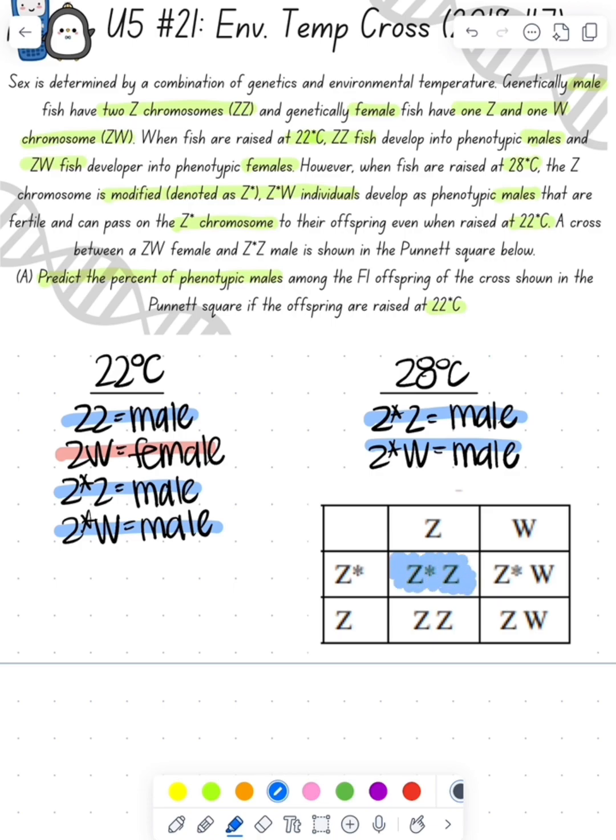If we look at the Punnett square, we see the first one is a Z*Z—that's a male. Z*W, that's a male. ZZ is a male and then ZW is a female. So we have a 75% chance of having a male in this cross.